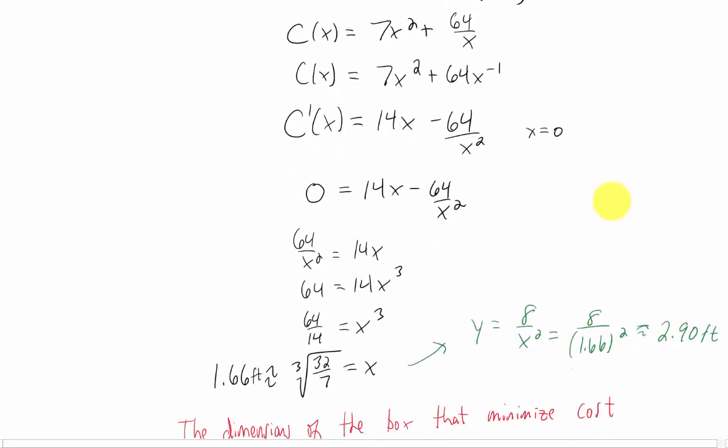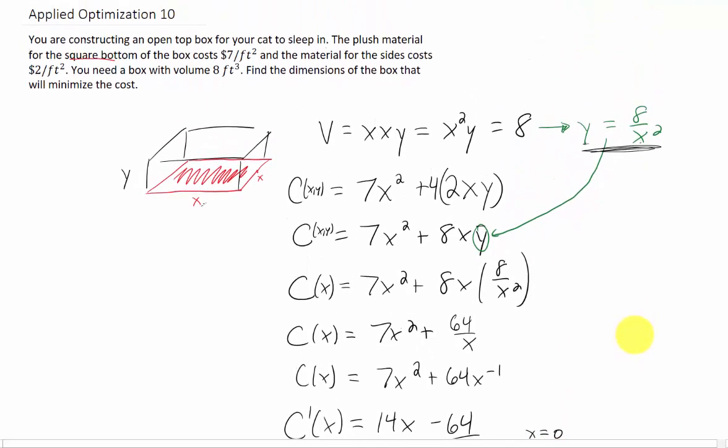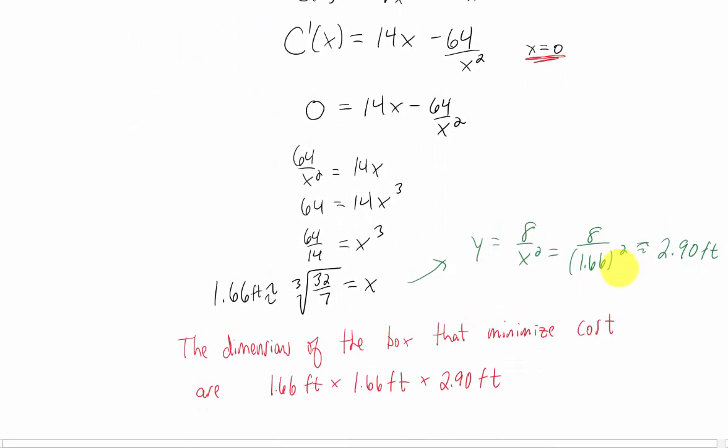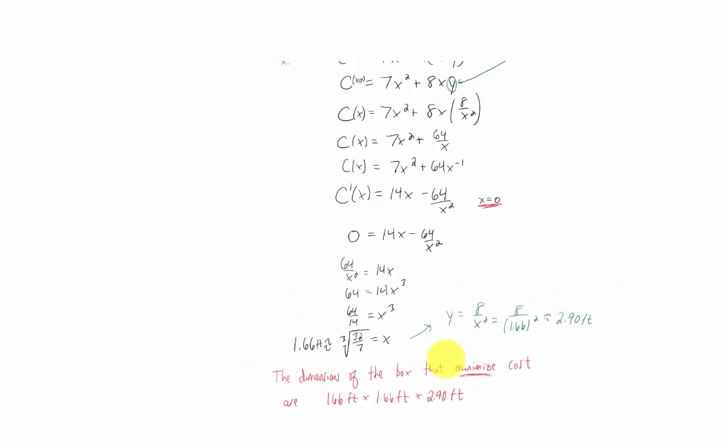Now, you'll notice I didn't go back and check the other critical point, X equals 0. However, that critical point doesn't make sense because that would give us a dimension of 0 for our box. The other thing I haven't been doing in these problems is actually verifying that the value we get is a maximum or minimum. There are a couple different ways to do this. One would be a first derivative test. To show this is a minimum, we would show that the first derivative is negative to the left of this X value, meaning the function is decreasing, and positive to the right, meaning the function is then increasing. There's also a second derivative test you can use to show this is a minimum.